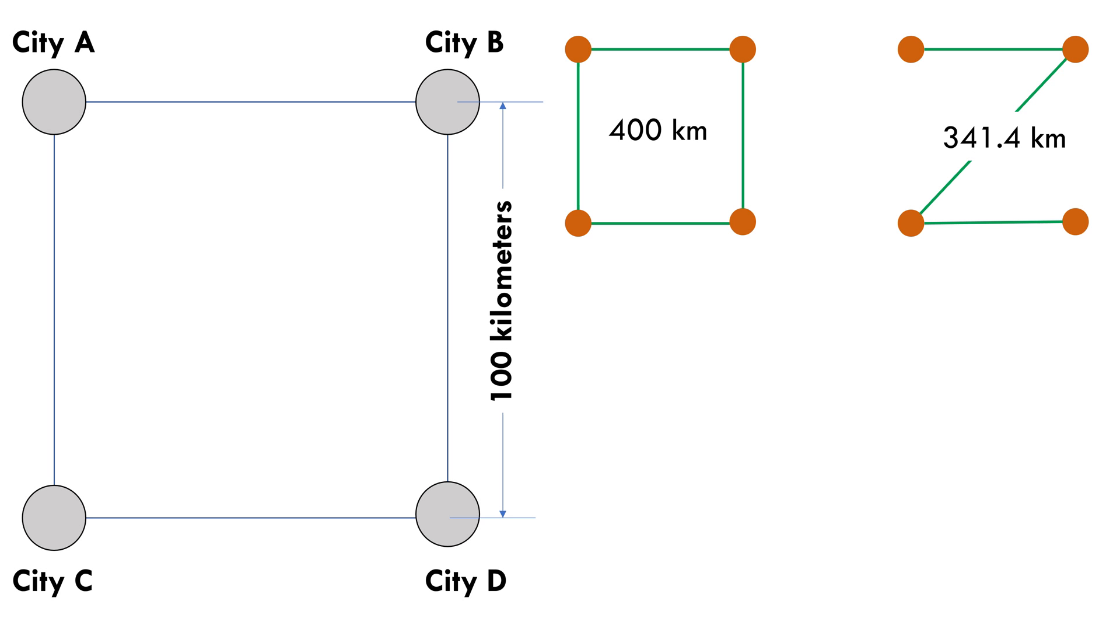Because they wanted to shorten it more, they shortened it to a plan like this which was 300 km and then to a plan like this which was 282.8 km.